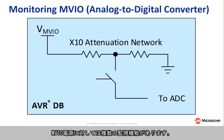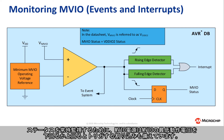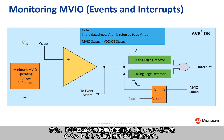There are multiple monitors for the MVIO power supply. One monitor available is the ADC, which can internally sample the voltage through a built-in x10 divider. For continuous status monitoring, the MVIO power supply also has an interrupt that is triggered whenever the power supply drops or rises above the minimum operating voltage for MVIO. Finally, there is an event signal that indicates if the MVIO power supply is above the minimum level.